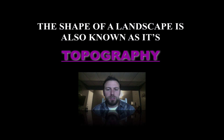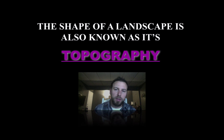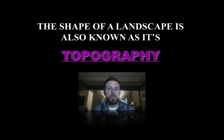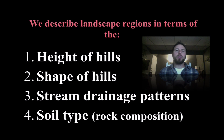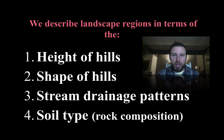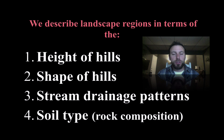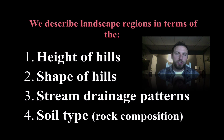The general landscape regions can also be called topography, which we learned back in the beginning of the year with mapping — basically looking at the different changes in elevation over a field. We describe landscape regions in a couple of different ways: the height of the hills, shape of the hills, v-shaped or u-shaped valleys, stream drainage patterns, how water flows over the land, and soil type, rock composition, or bedrock.